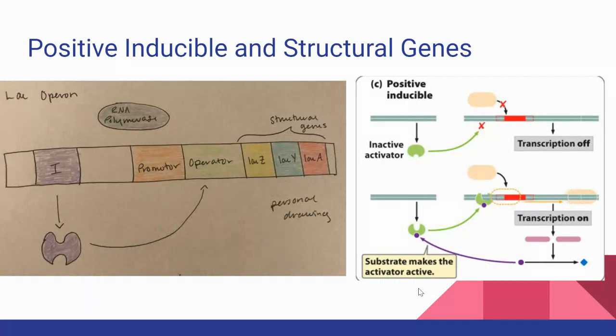Positive control is when a regulatory protein binds to DNA to stimulate transcription. It is known as an activator, which accelerates transcription.